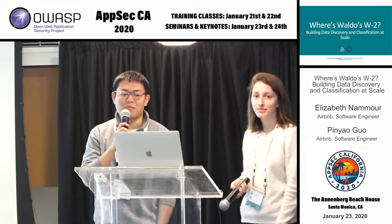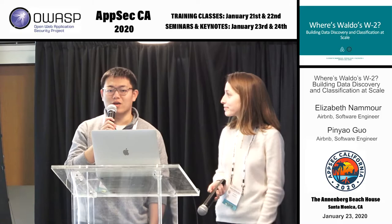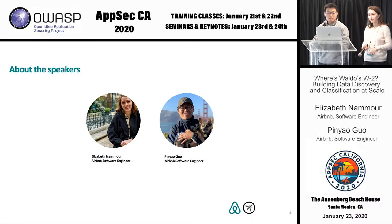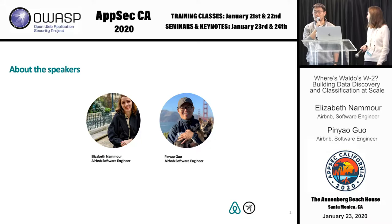Hello everyone, my name is Pingyao Guo, and this is Elizabeth Namor. Today we are going to talk about the work that we have been doing lately. The topic is about building data discovery and classification at scale. We are both software engineers on the data security team at Airbnb, working on building data privacy and security tools and infrastructure.